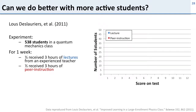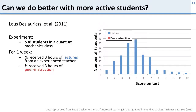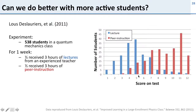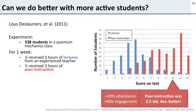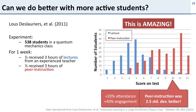They evaluated how students performed on the same test after one week. The lecture students scored lower; the peer instruction students did phenomenally better — two and a half standard deviations better from switching passive lectures for active peer instruction. They also saw higher attendance and students more engaged in the material. What this says is that lectures are really bad ways to teach, and you can do much better by getting students to be active. That's the motivation for flipping the classroom.